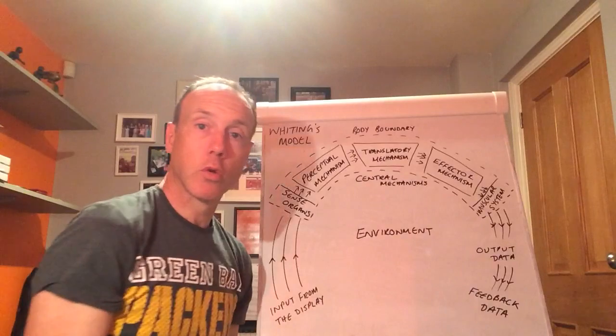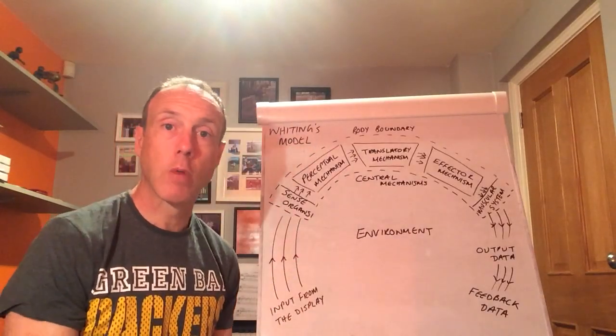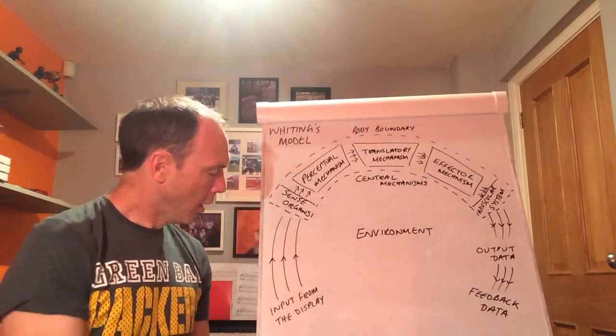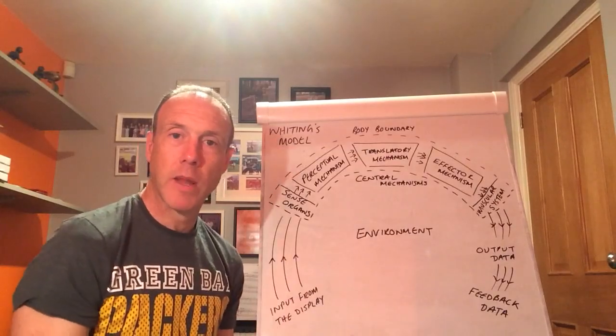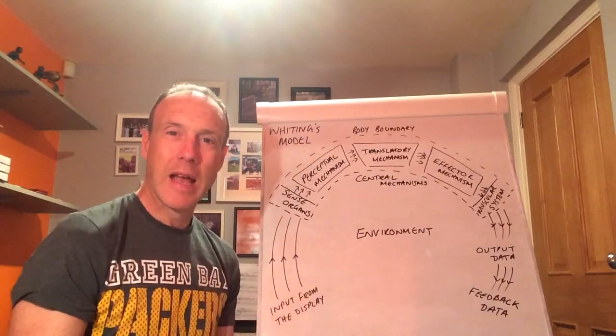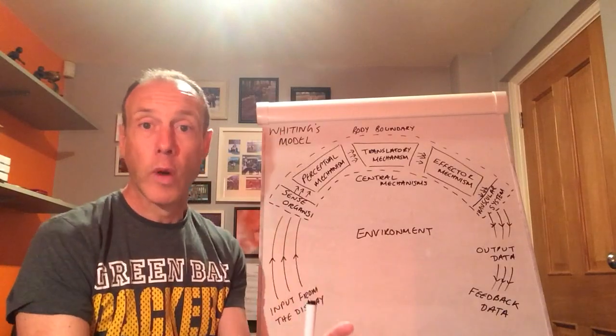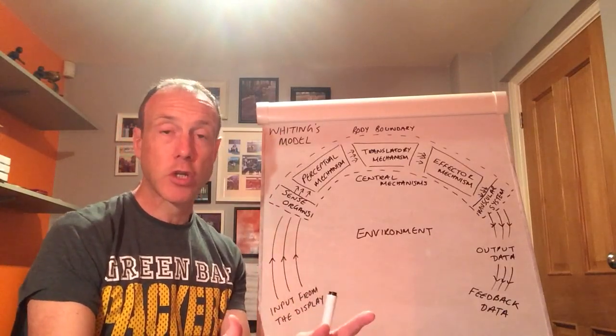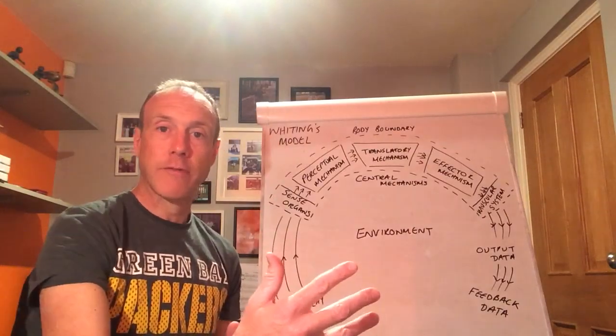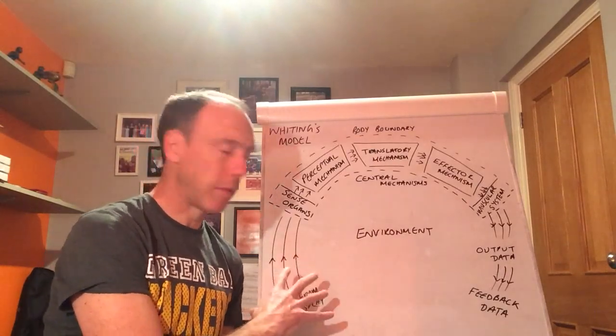So that's a real whistle-stop tour of Whiting's model. So why don't we do it through a worked example. So I'm going to use a simple pass in rugby. So we have input from the display. So I'm the player and I'm in possession of the ball. So the input I have is essentially the field, where I am on the field, where my teammates are, where the opposition are, what kind of grip do I have on the ball, the space that I have to run into and so on. So that's the huge amount of input that I have within that rugby match.